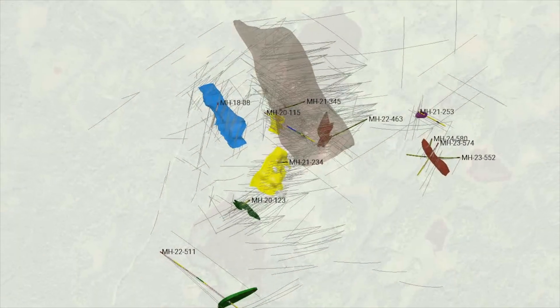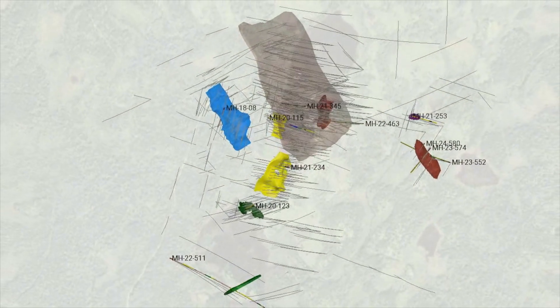You will see here we have a series of mafic dikes highlighted in green that vary from pre-sin to post gold mineralization. There is a later series of structures highlighted in grey and our high-grade gold-bearing zones are highlighted in red.